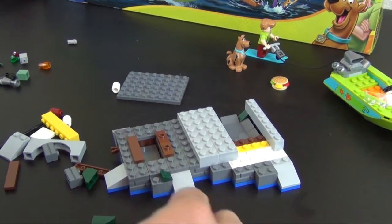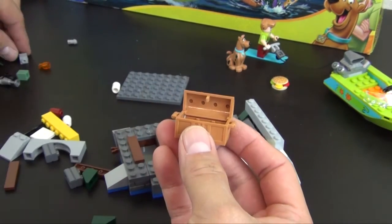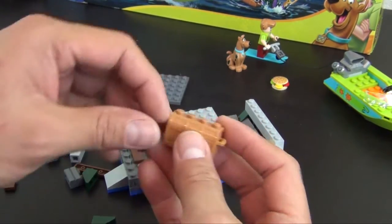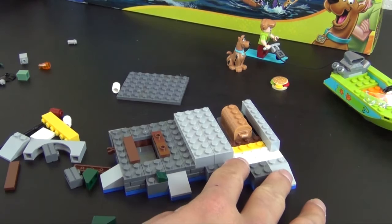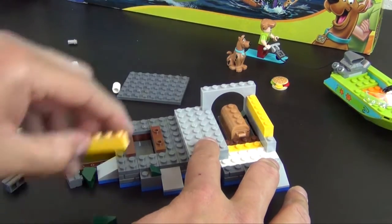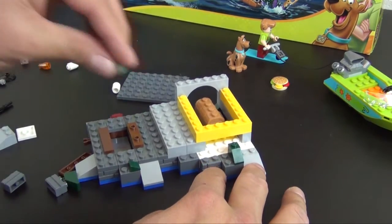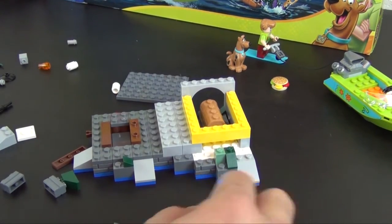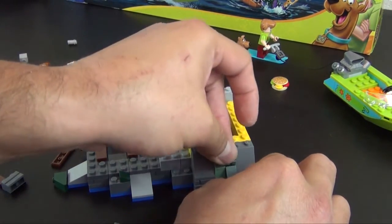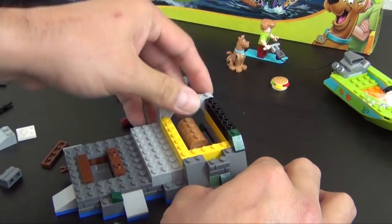Alright, we have a treasure chest and inside of this chest is a couple gems and a silver metallic goblet. And this just sits right down there in that opening. Technic brick, slope brick.